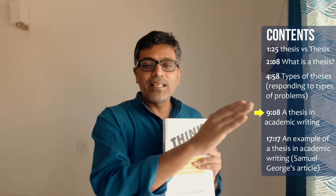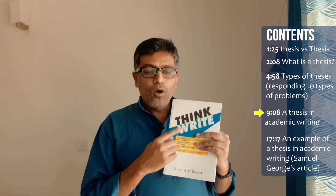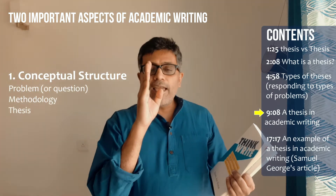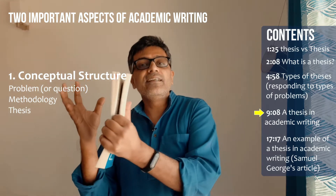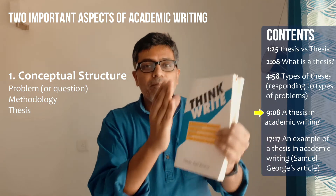Everything in this book is connected, which is why the whole book is really important. In academic writing, I talk about thinking and writing. You need to be clear about what you think and about how you write. I have two important aspects in my academic writing chapter. One is the conceptual structure — every academic writing needs to have a clear problem, a clear methodology, and a clear solution, a clear thesis. So you have problem, method, and thesis. That's the conceptual structure — you need to be clear about what you're doing.